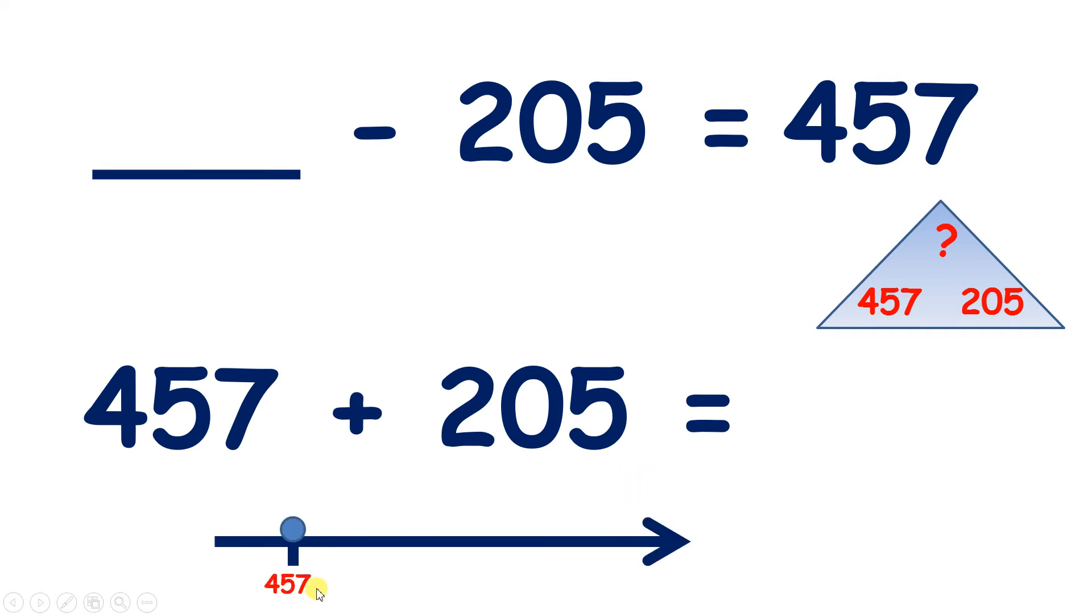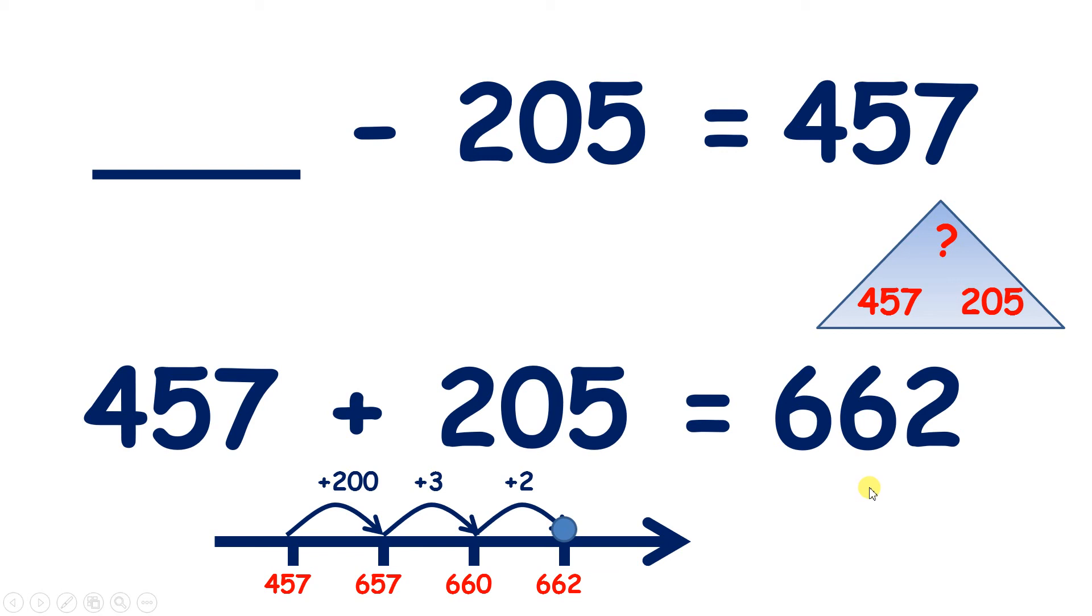If we start on 457, adding 200s takes us to 657. Now we need to add 5 units. So if we add 3, we get to 660, and then we can add 2 more to get to 662. So we've added 5 altogether, and our answer is 662. So 662 is the top number in our triangle,